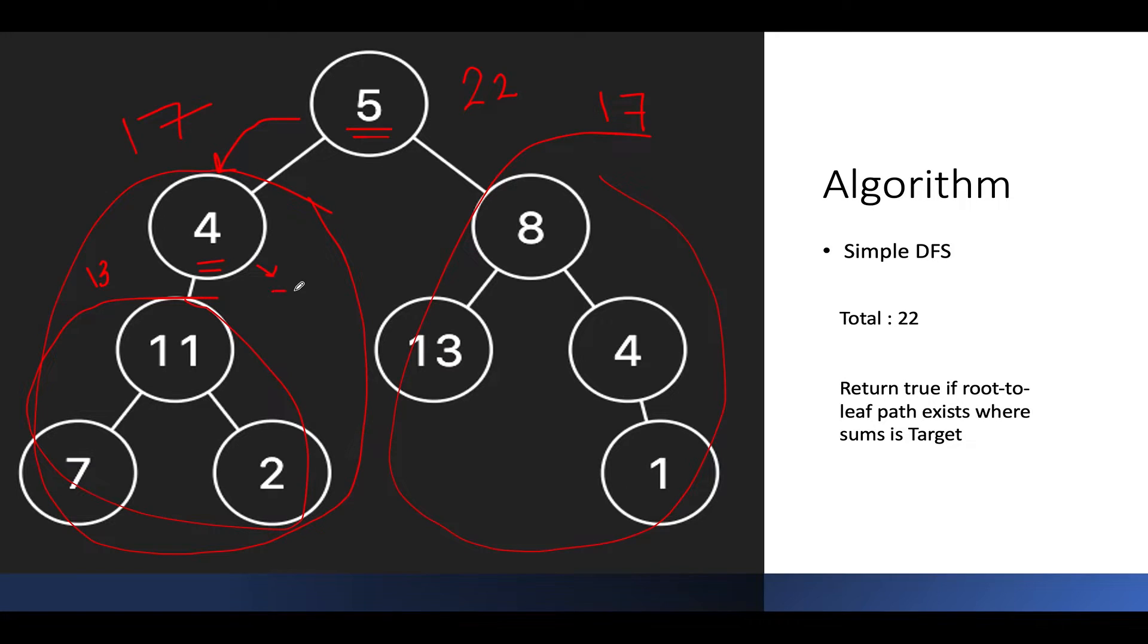Let's proceed ahead. The target for this subtree was 13. The current value is 11. 11 minus 13, what does it give you? It gives you 2. So the target for this subtree becomes 2 and the target for this subtree also becomes 2.